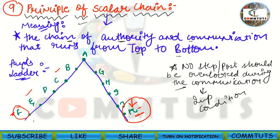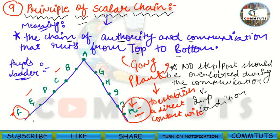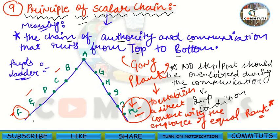Keeping this problem in mind, a new concept was developed called Gangplank. The Gangplank concept was developed to establish direct contact between employees of equal rank. In case of emergency, same-rank employees can directly contact each other to avoid delay in communication. For example, if Mr. F needs to contact Mr. K, they can contact each other directly via gangplank.